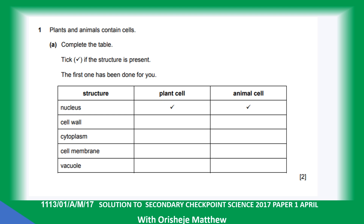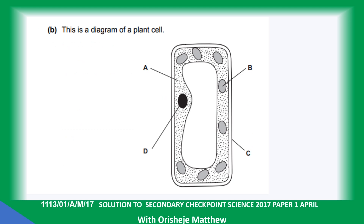Question one: plant and animal cells. Complete the table by putting a tick on the structure present in each cell. The first one has been done for you. Nucleus is present in both plant and animal cells. Cytoplasm is present in both. Cell membrane is present in both. Vacuole is present only in plant cells. The plant cell has cytoplasm, chloroplasts, cell wall, and nucleus.